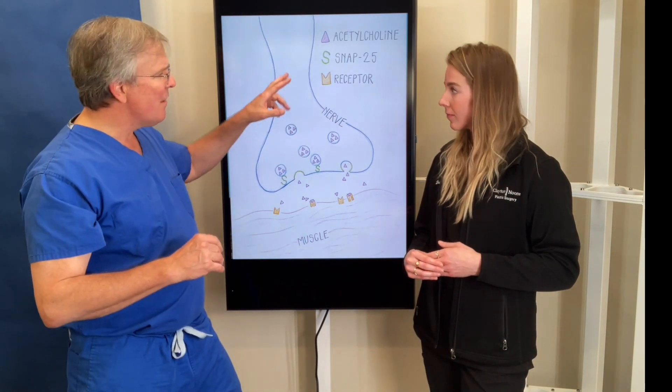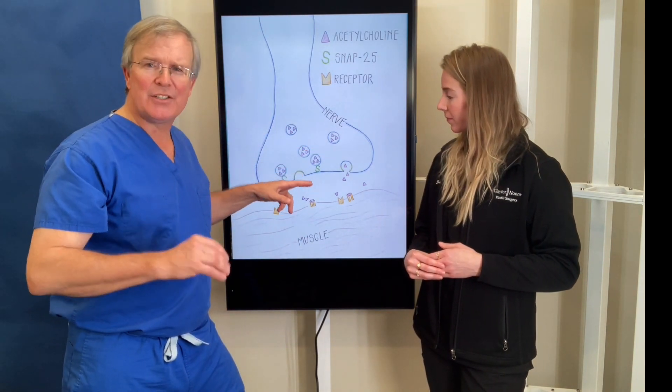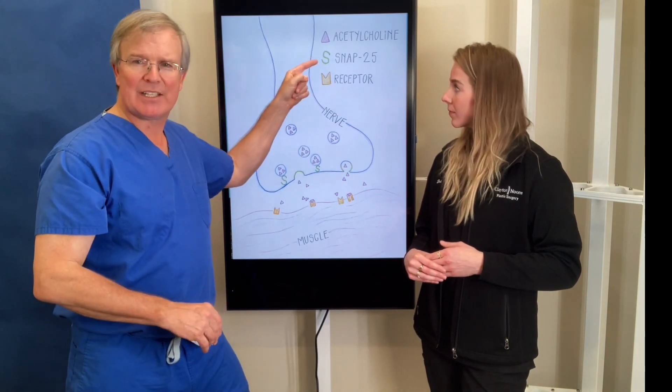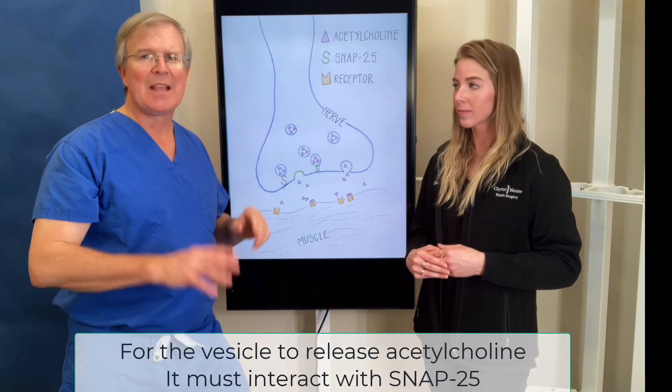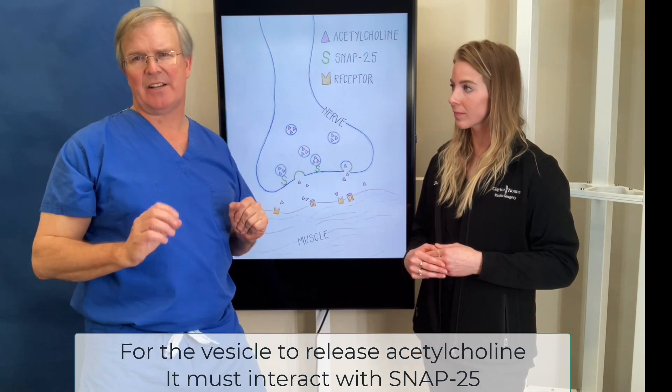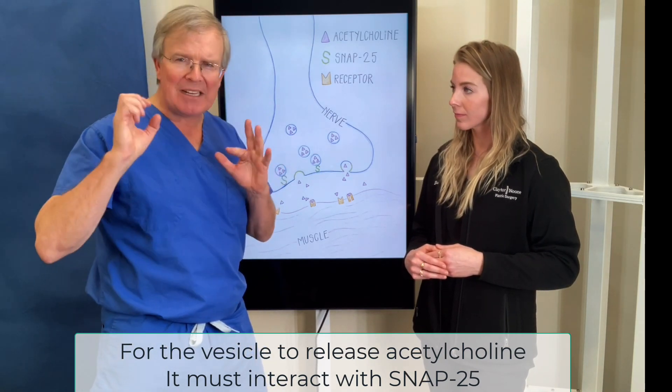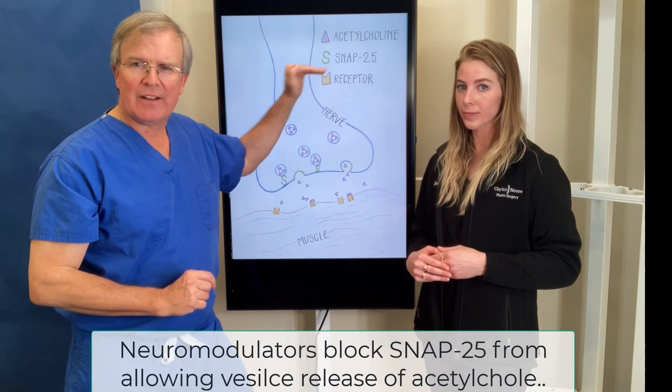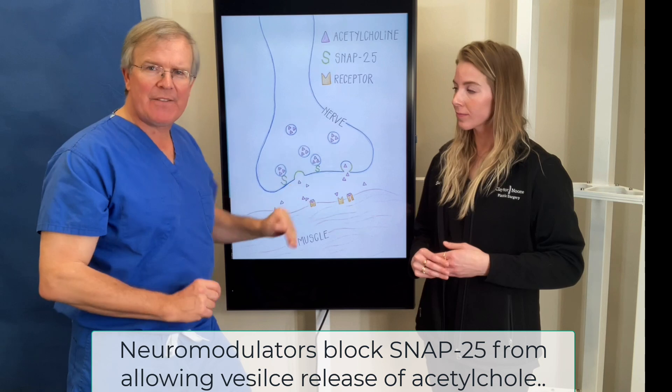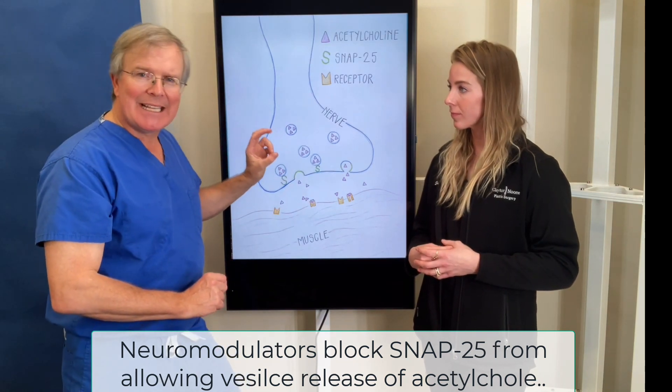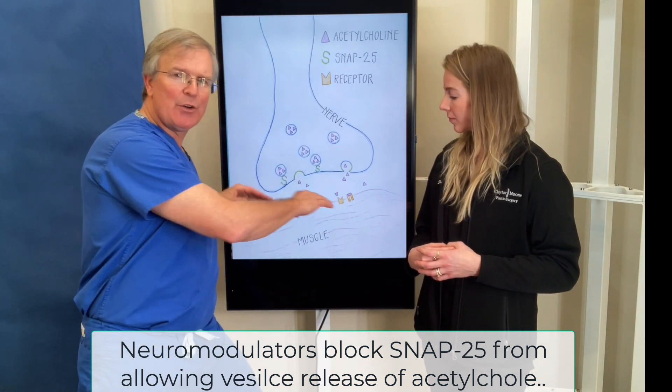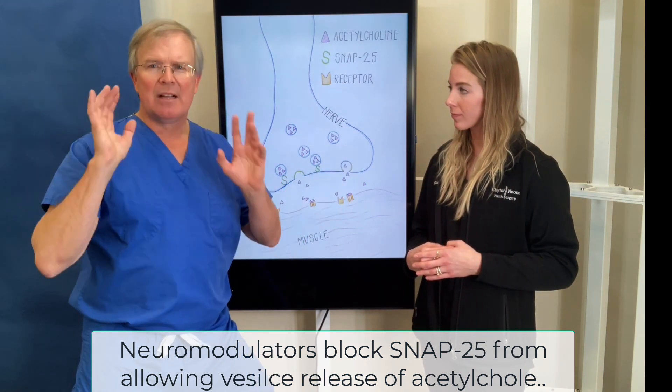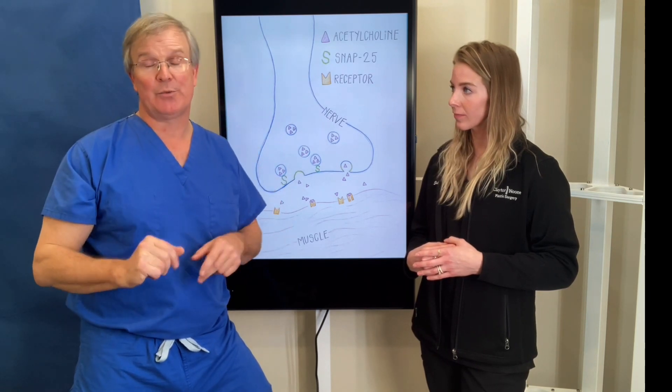So they adhere to these little receptors. For the vesicle to bind to the wall of the nerve and release, it must interact with a protein called SNAP-25. The whole basis of how neuromodulators work, the whole basis of how Botox works, is that it blocks SNAP-25. When it blocks SNAP-25, the vesicle cannot bind to the edge of the nerve and it cannot be released. That's how neuromodulators work.